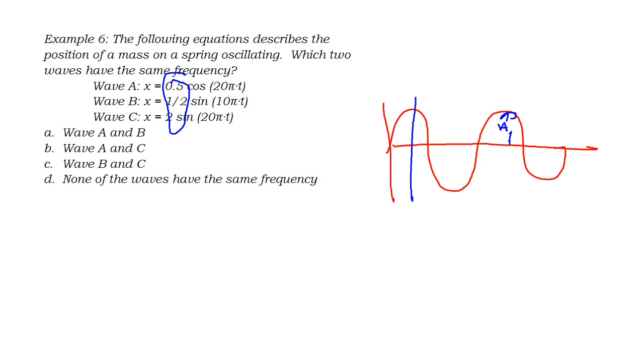What I do care about, if this is a time axis, is the period, because two waves to have the same period will also have the same frequency. The period is controlled by the factor in here, before the T. That factor is actually called the angular frequency, and it's equal to two pi over the period, or two pi times the frequency.